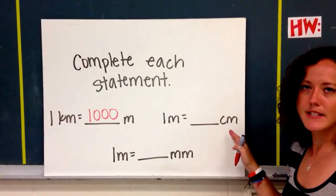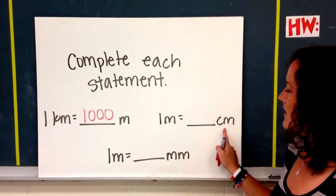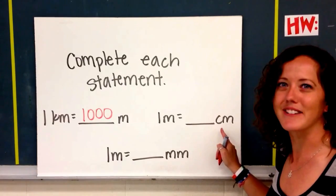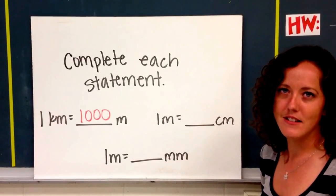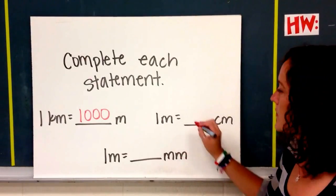1 meter is equal to how many centimeters? Well, centi is the prefix on this abbreviation, and centi means 100, not 1,000, 100. So think of cents and a dollar. There are 100 cents in a dollar, and so that means there are 100 centimeters for every 1 meter.